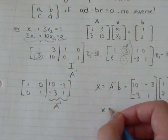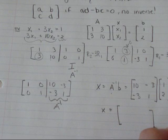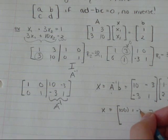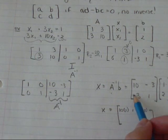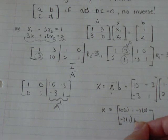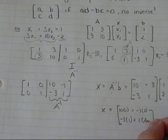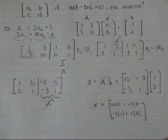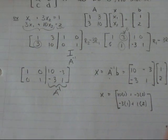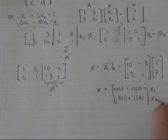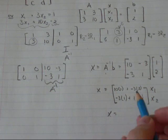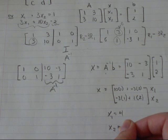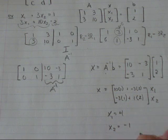x equals 10 times 1 plus negative 3 times 2. And then on the bottom, negative 3 times 1 plus 1 times 2. And this is just, I'm finding that just by using the rules of matrix multiplication. So I have now found this is going to be equal to my x1 and my x2. So x1 equals, this is 10 times 1 is 10, minus 3 times 2 is 6. So x1 equals 4. x2 equals negative 3 plus 2, so negative 1.